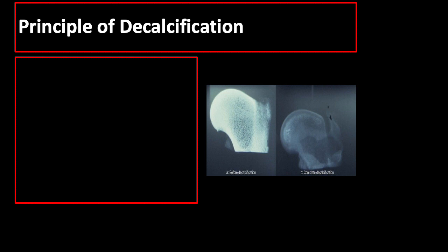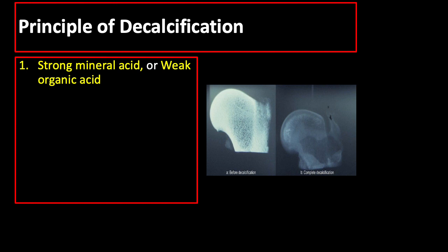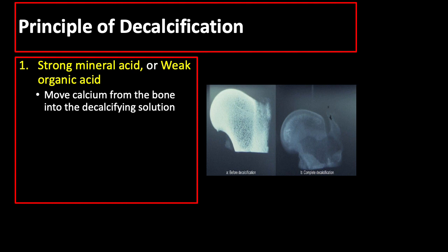The principle behind decalcification is quite simple. You just need to remove the substance that makes the bone hard — so you remove the calcium from the bone. A strong mineral acid and weak organic acid form soluble calcium salts in an ion exchange that moves calcium from the bone into the decalcifying solution.